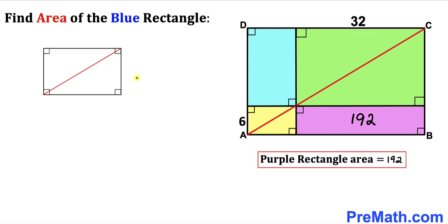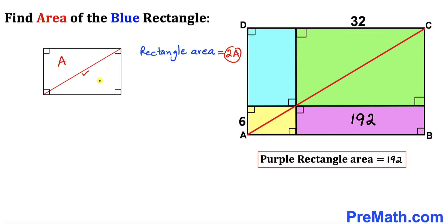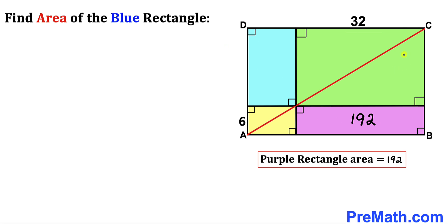Let me go over a basic review. If a rectangle has area 2a, then its main diagonal divides the rectangle into two equal parts, each with area a, so that a plus a equals 2a. Now, focusing on the green rectangle, its diagonal divides it into two equal areas.